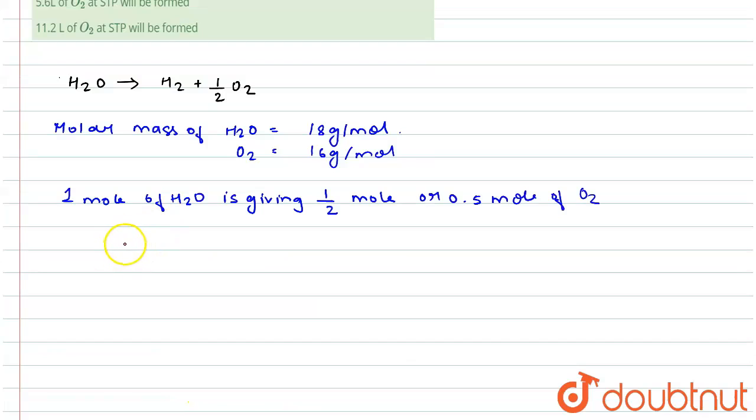So we know that volume occupied by one mole of any substance at STP is 22.4 liter. So by unitary method, volume occupied by 0.5 mole of O2 at STP...